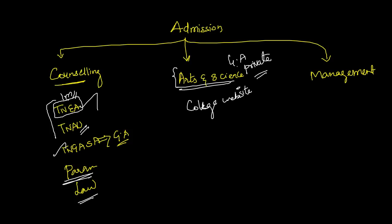The third category is Management Quota. If you want to go to TNEA but feel like going directly to a college, or if you want to go to a private college, you can pay a donation or a specific extra amount of money. That is the management quota — you pay extra fees directly to the college.